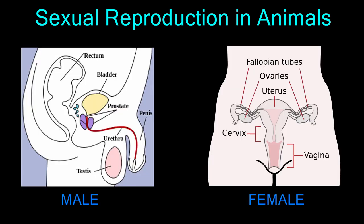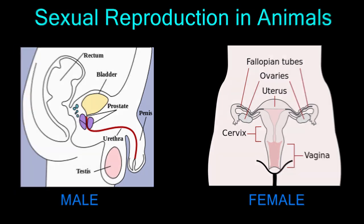You have now received an overview of sexual reproduction in animals. In the next two lessons, we will take an in-depth look at the male and female reproductive systems in humans and the specialized structures that make reproduction possible.